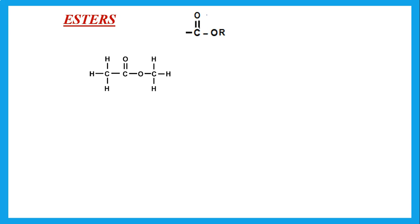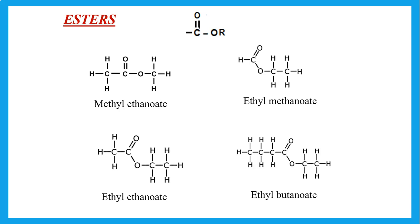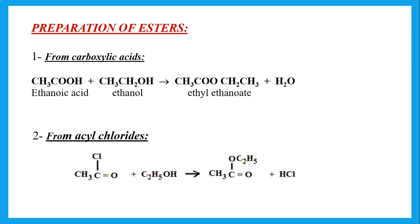Esters have the group C=O bonded to an OR (alkyl group). To name them: the part that was the alcohol becomes the alkyl prefix, and the part from the acid gives the suffix. For example, methyl ethanoate, ethyl methanoate, ethyl ethanoate, and ethyl butanoate. Esters can be prepared from alcohols reacting with acids, or alcohols reacting with acyl chlorides.